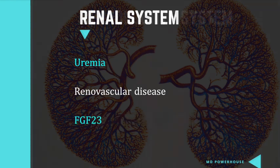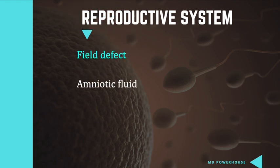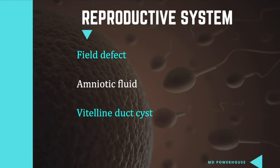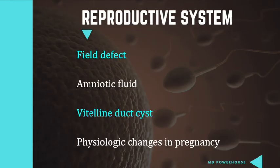In the reproductive system, the updates include field defects, amniotic fluid, endometriosis, and the physiologic changes in pregnancy. And if this was you when the First Aid 2021 was just released, then like this video.